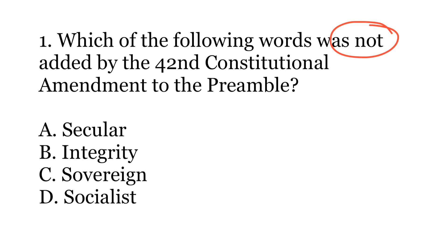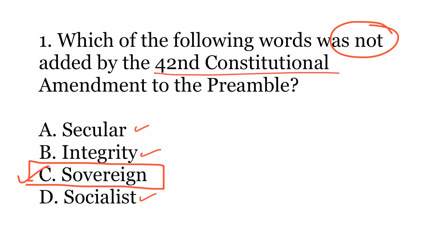The correct option is C. Sovereign. Socialist, secular, and integrity were the three words that were added by the 42nd constitutional amendment, and the word sovereign was already there.